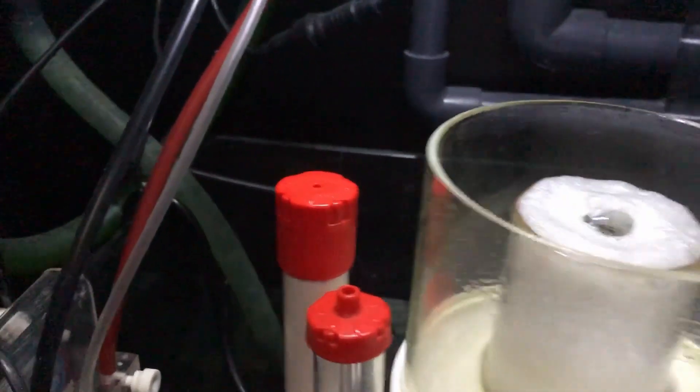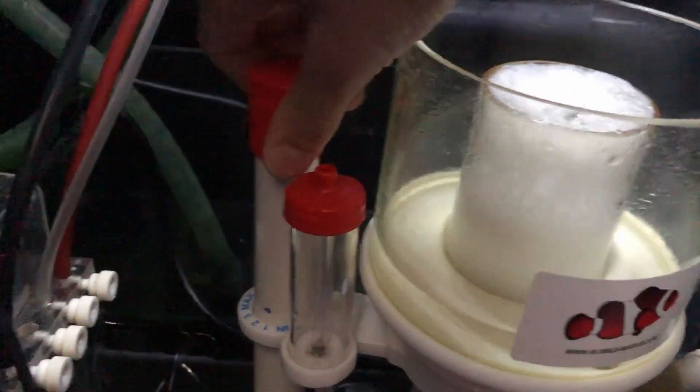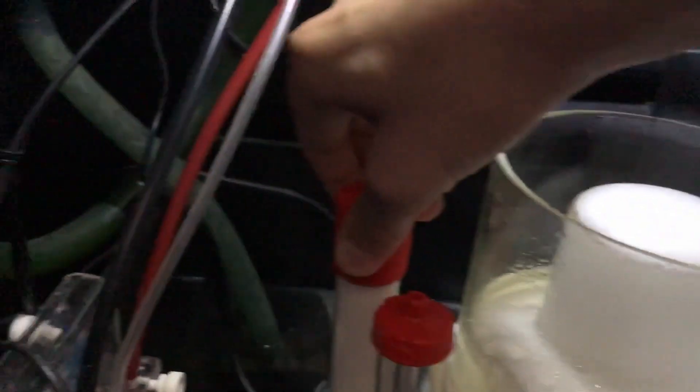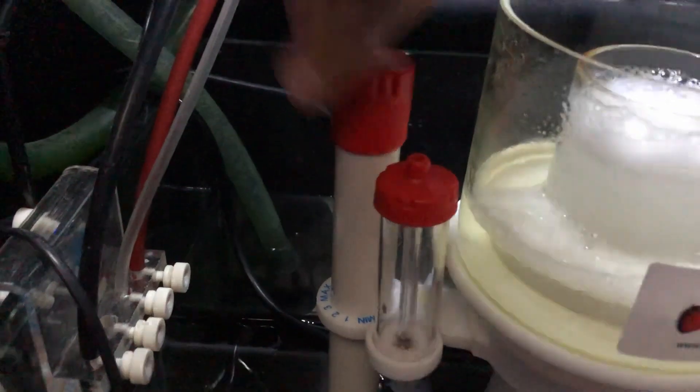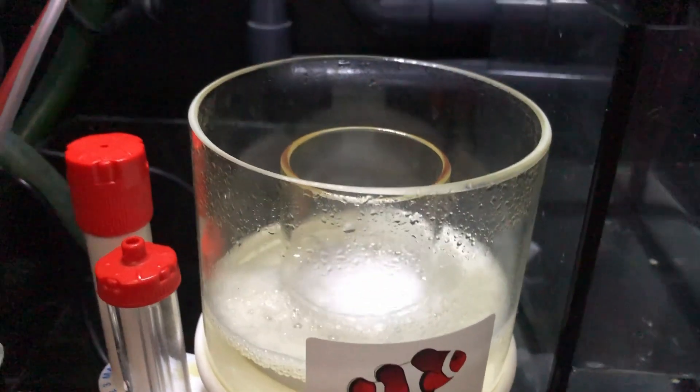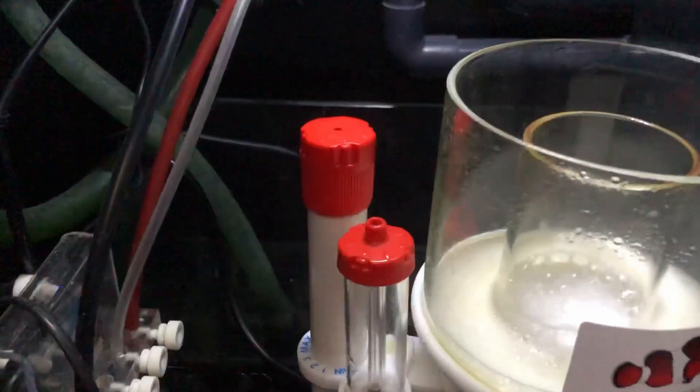Okay, so I took the lid off just to show you. This is the adjuster. So if it's at minimum, you can see that the bubbles just overflow. If it's at maximum, the bubbles actually go down. So that's basically how you adjust it.